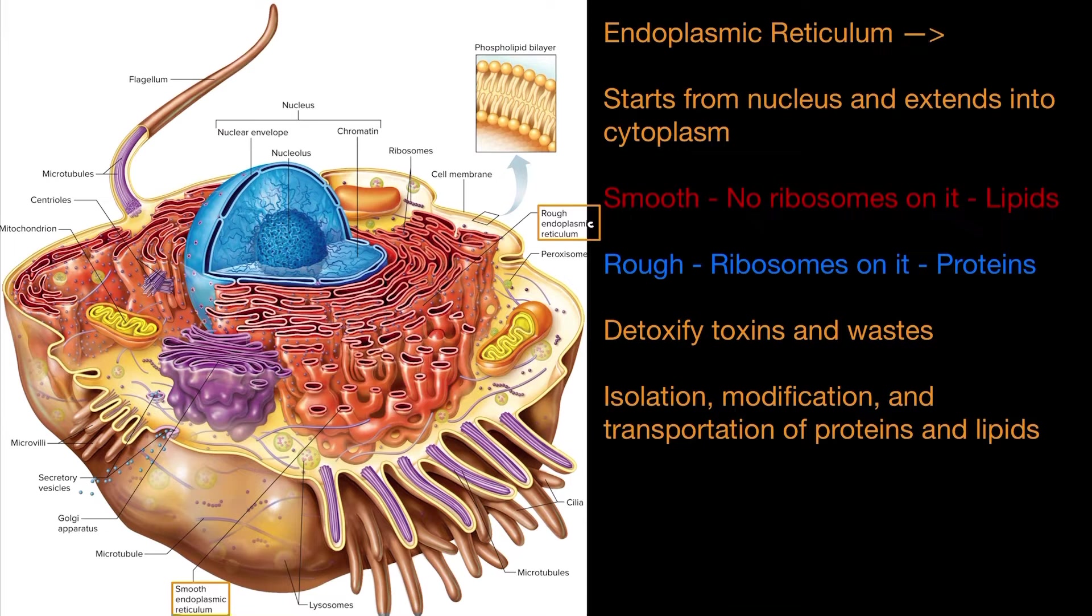Now the smooth endoplasmic reticulum doesn't have any ribosomes in it and its primary job is to package lipids. The rough endoplasmic reticulum does have ribosomes on it and its primary job is to package proteins. One of its other jobs is also to detoxify toxins and wastes and isolation, modification, and transportation of proteins and lipids.